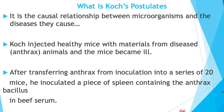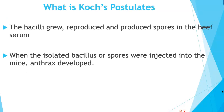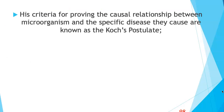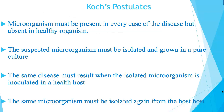Koch explained his postulates when he first injected healthy mice with material from mice that had anthrax disease, and all the healthy mice became ill. He then transferred the bacteria causing anthrax through a series of 20 mice and also inoculated Bacillus anthracis onto beef serum. Over time the bacillus grew, reproduced, and produced spores. When he isolated the spores from the serum and injected them into healthy mice, the healthy mice again developed the disease, proving Bacillus anthracis caused anthrax.